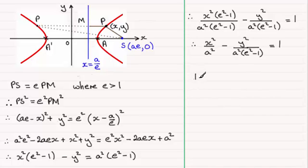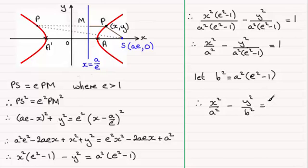Now, if we let B squared equal A squared times E squared minus one, then our equation turns into the Cartesian form that we should now be familiar with: x squared over A squared minus y squared divided by B squared equals one.